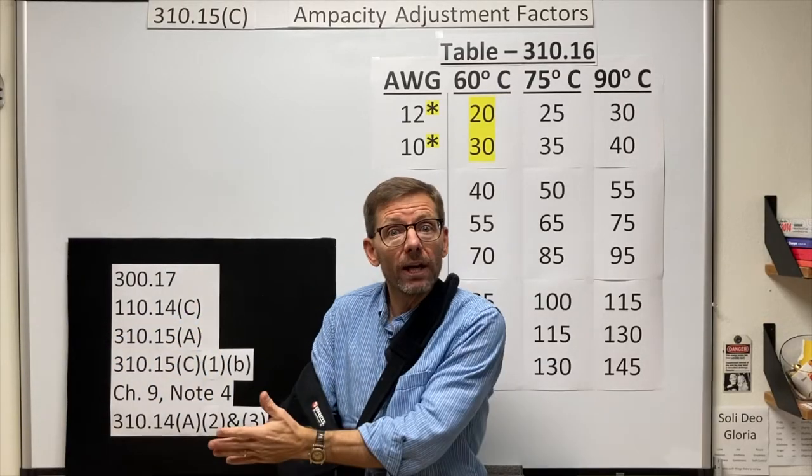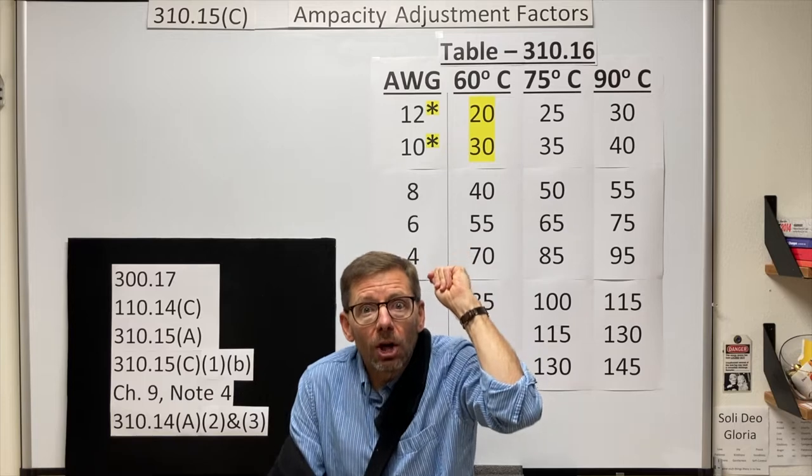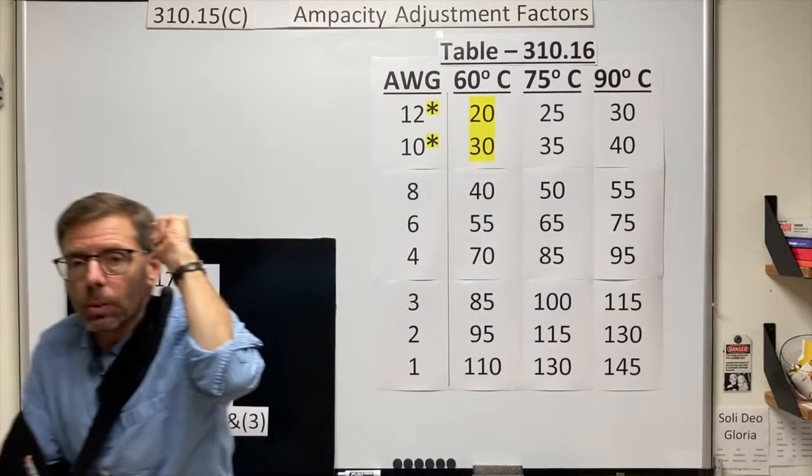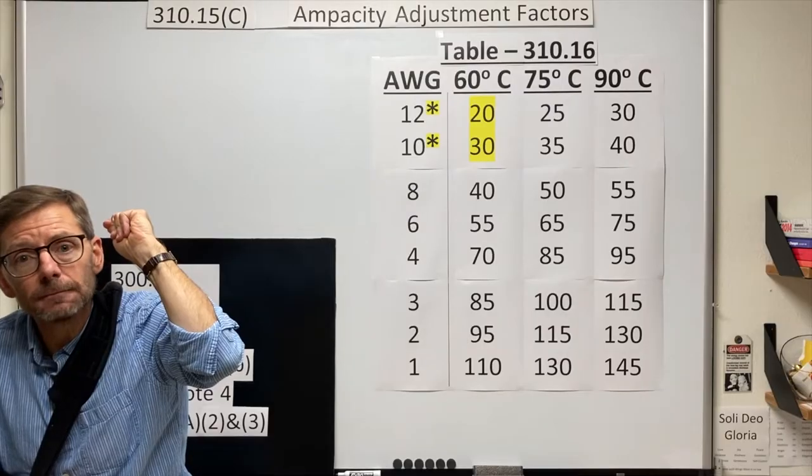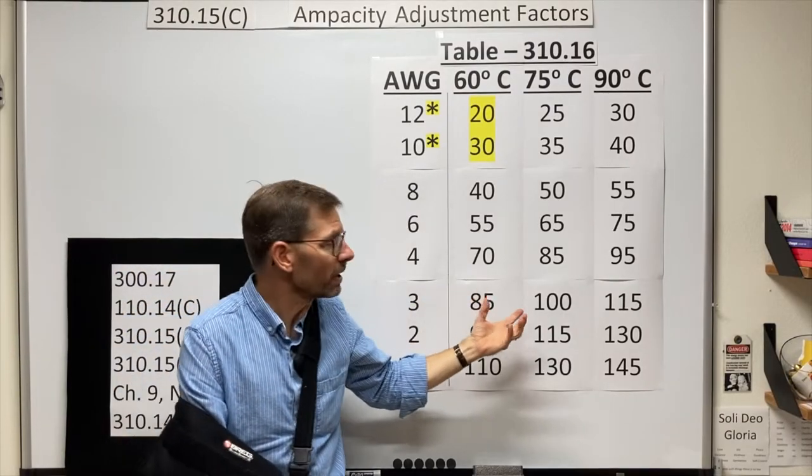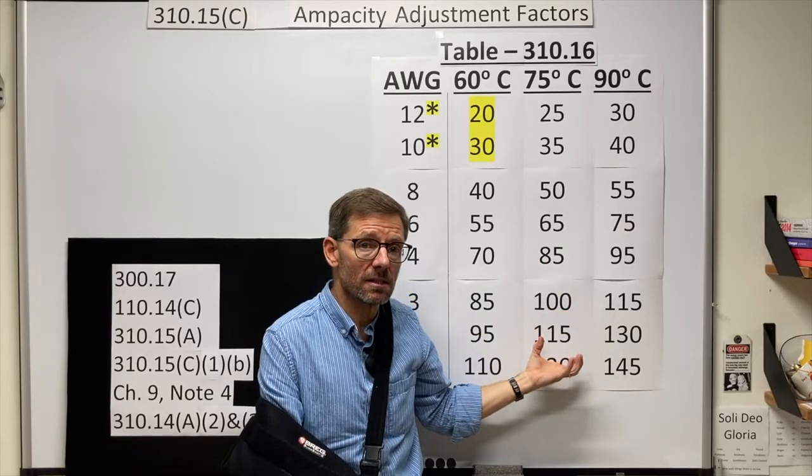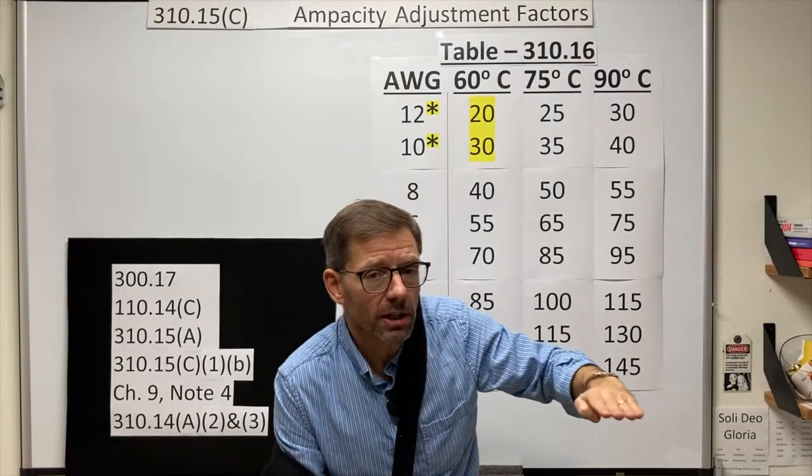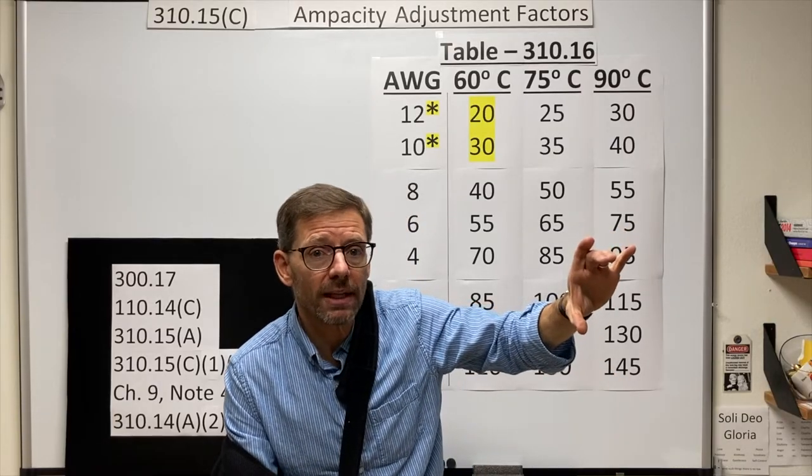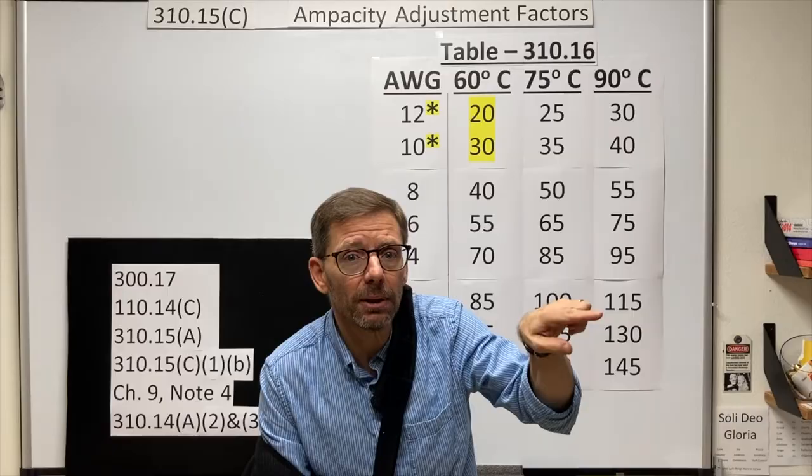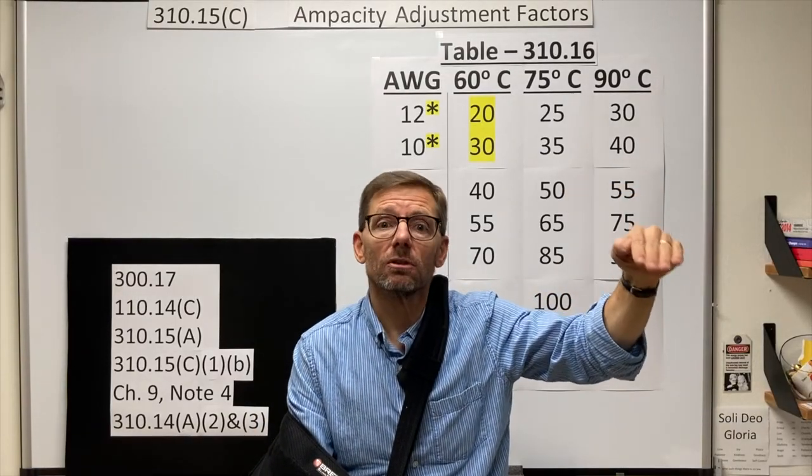Wouldn't it be nice if before we got on the train, we could all have a little ice pack, something that would lower our individual temperatures so when we get on the train we're all safe by the time we get to the destination? Conductors are similar. What we do is we restrict their ampacities so each conductor is starting off from a lower temperature. That way, when we put them in a raceway together, they still heat each other up a little bit, but not to the extent that they do damage to one another.